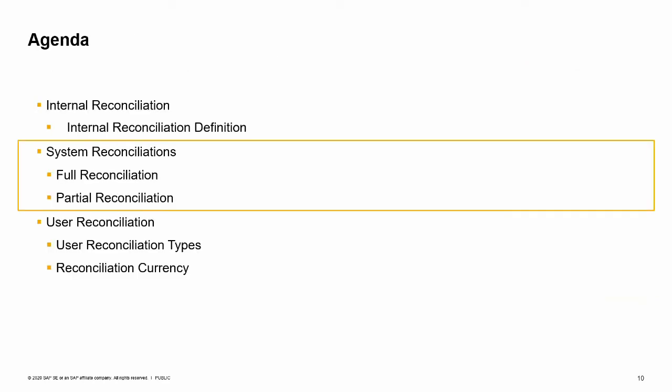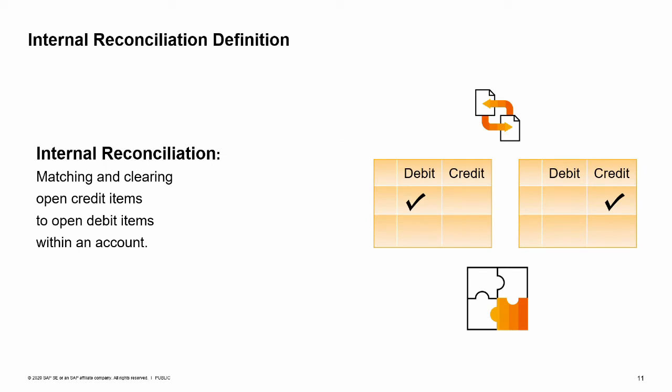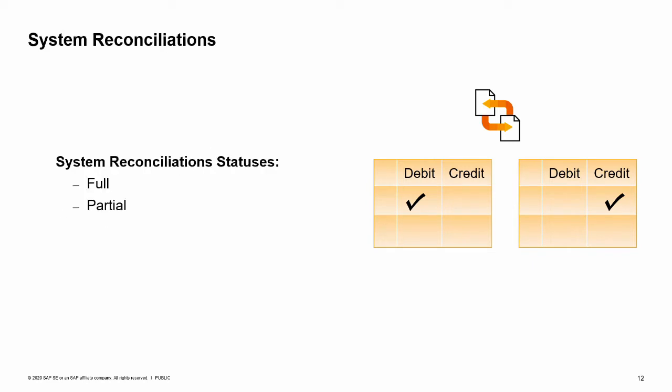We start with system reconciliation that occurred during everyday work. The term internal reconciliation refers to the matching and clearing of open credit items to open debit items within an account, therefore internal. This is necessary for accounts where a business process is not regarded as fully complete until each credit amount has a corresponding debit amount. For customer accounts, a receivable must be followed by an incoming payment credit. For vendor accounts, a liability credit must be followed by an outgoing payment debit.